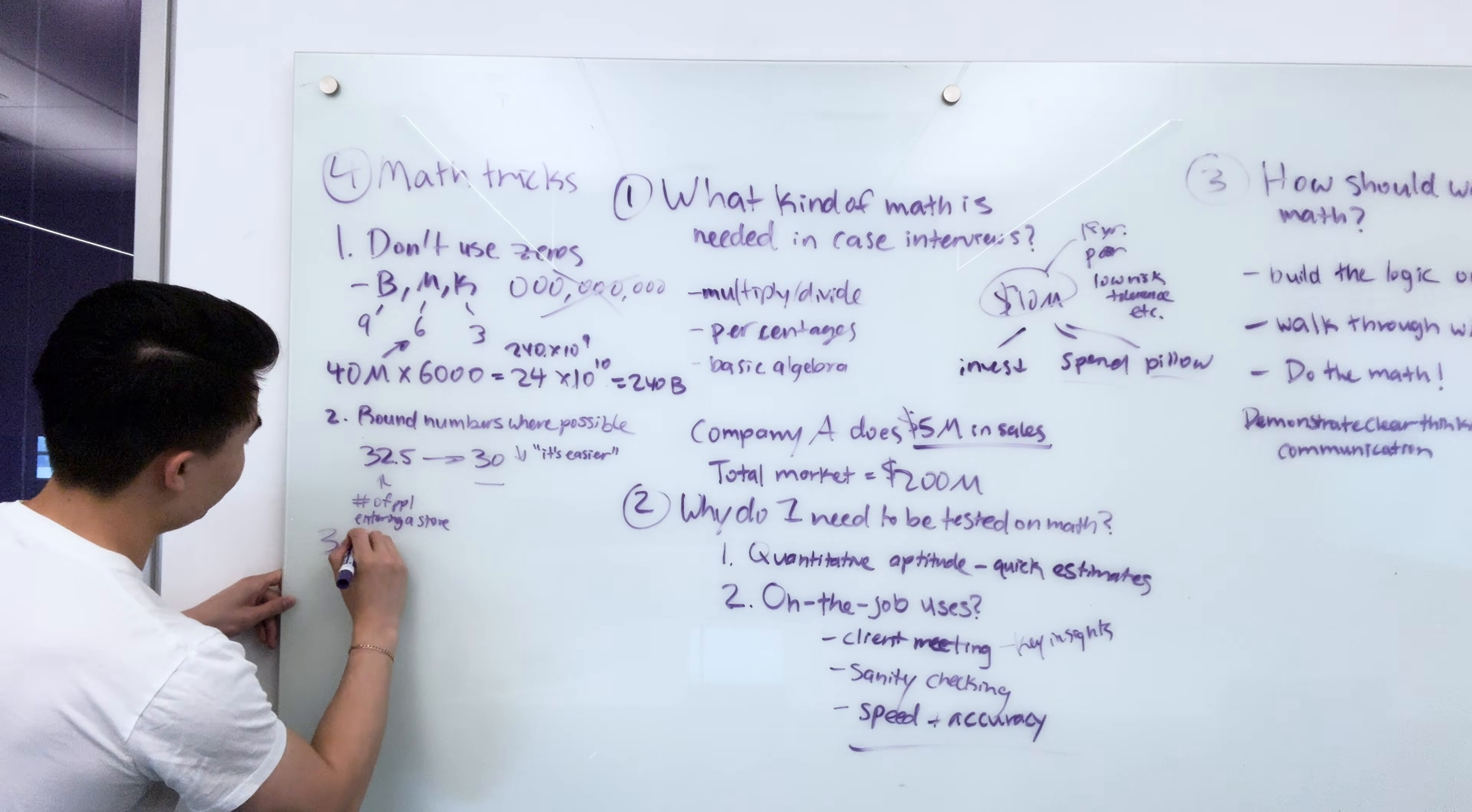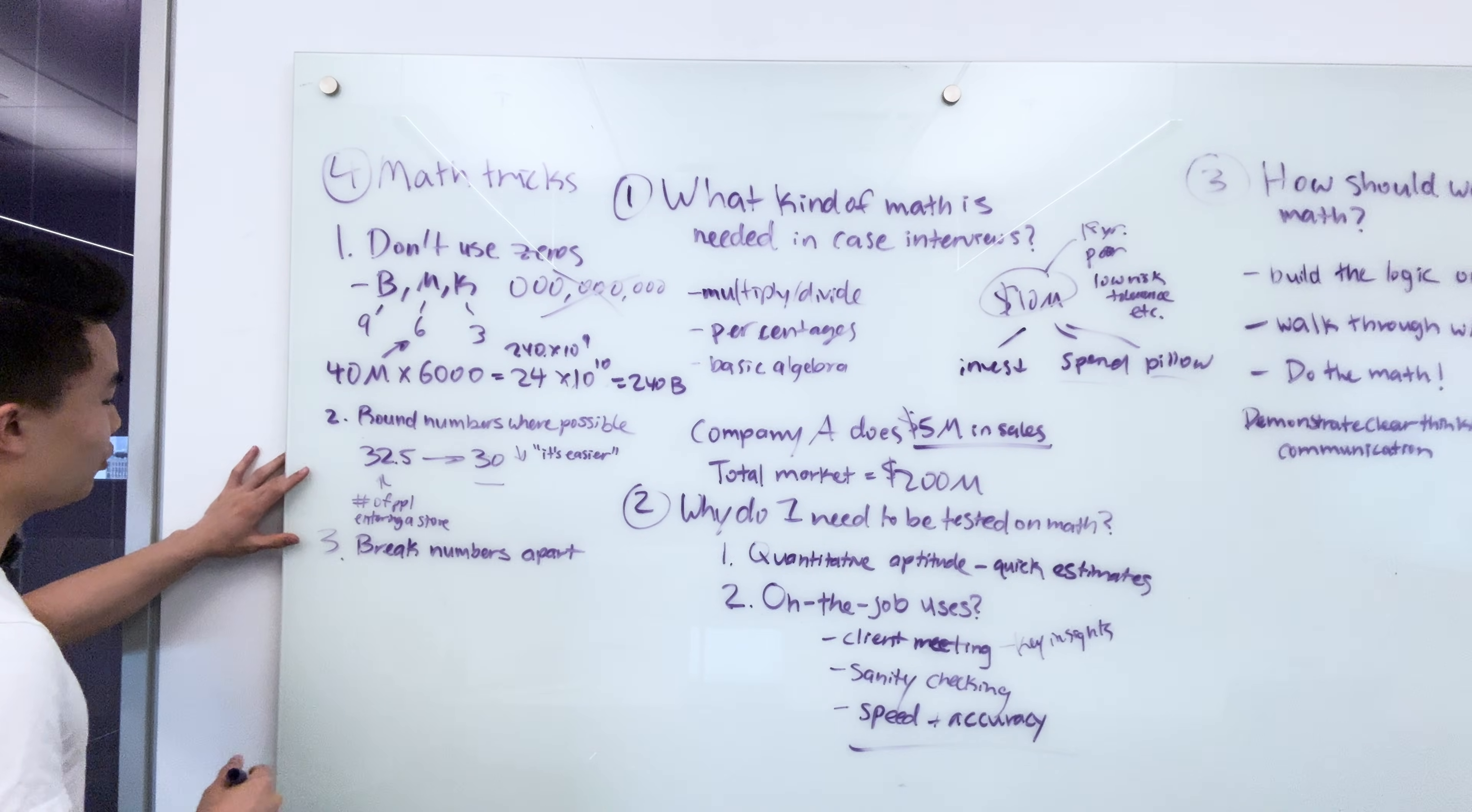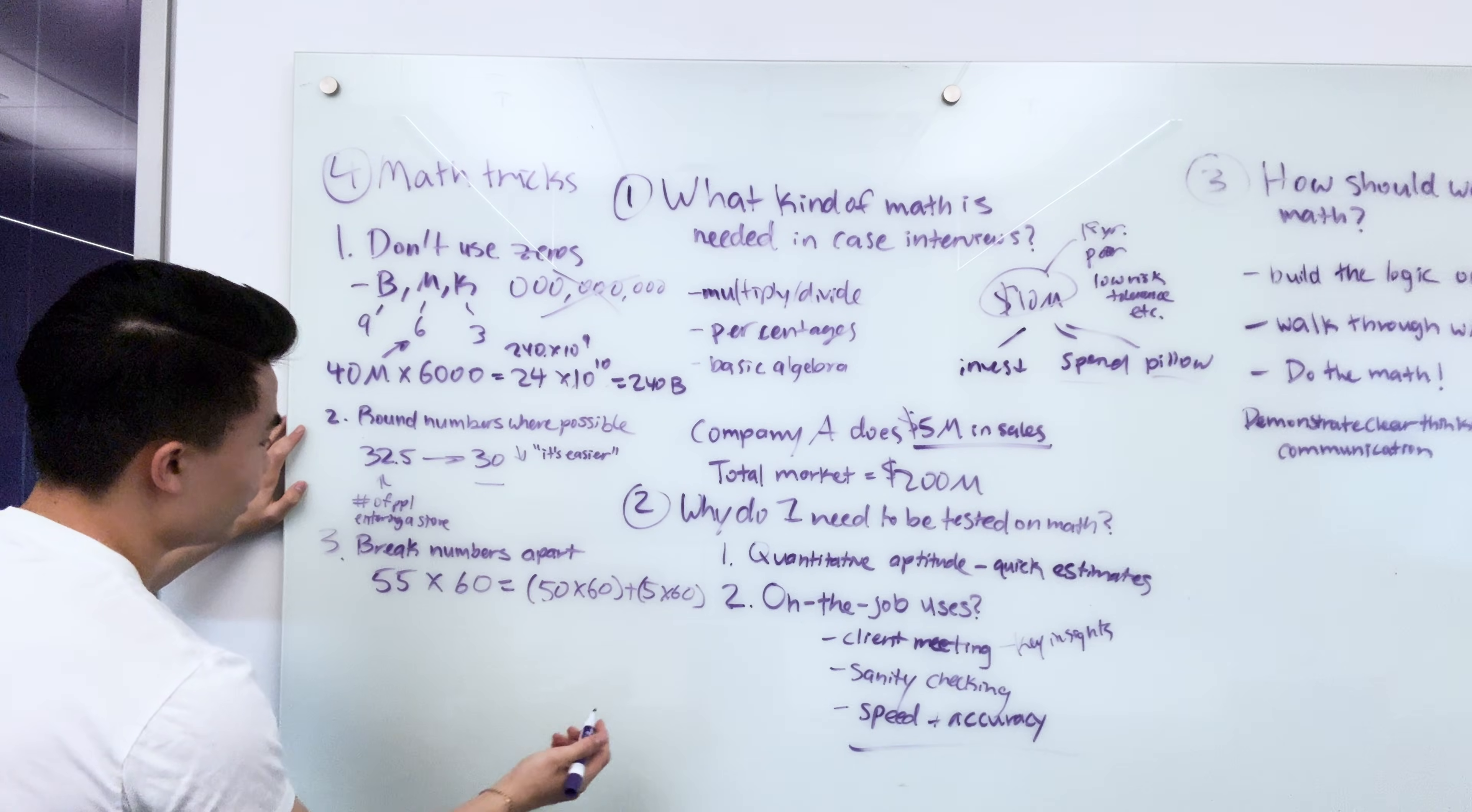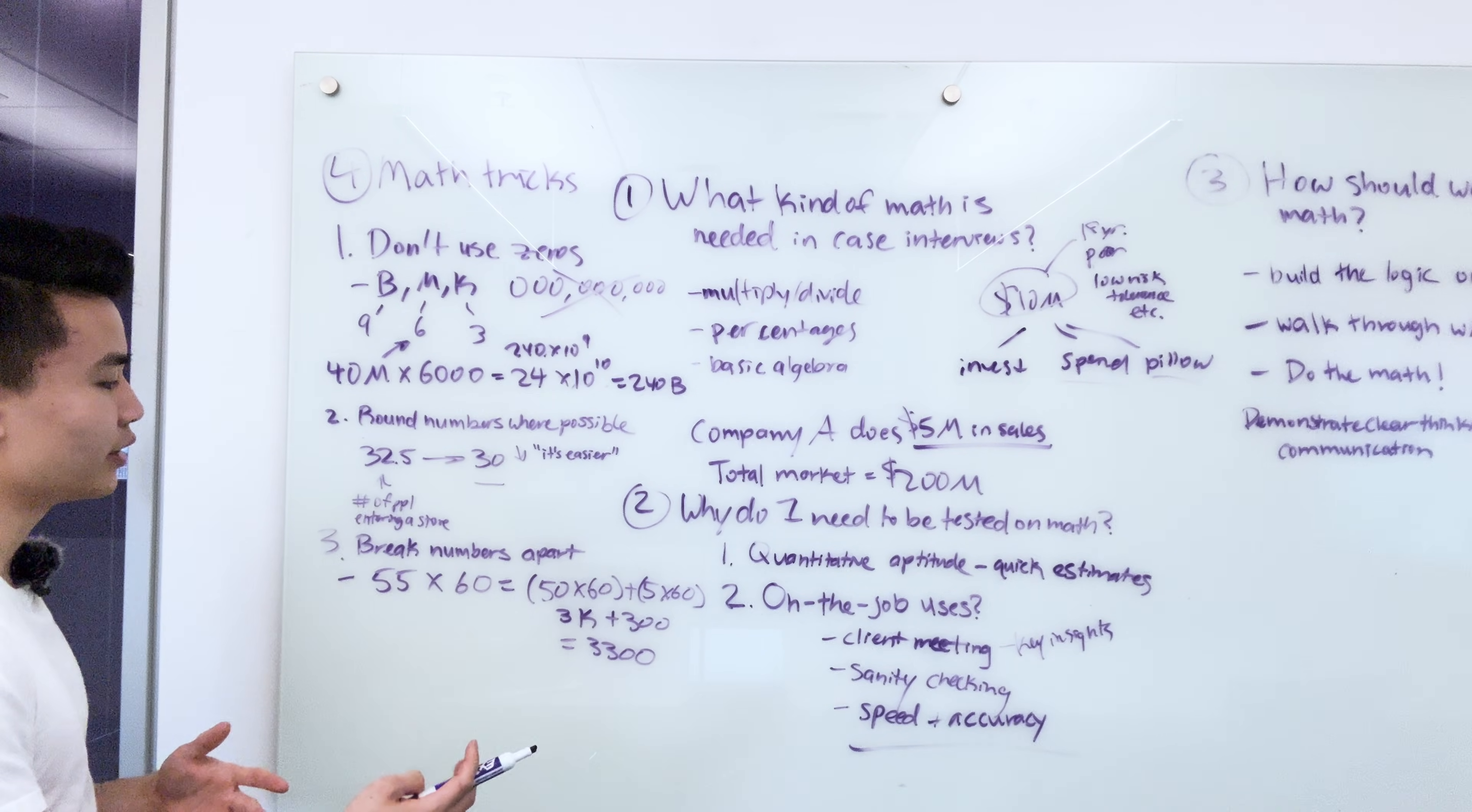Now the third tip that I have for math is you should always break numbers apart. Now, what do I mean by that? Well, oftentimes you're going to be asked to do things like double digit multiplication or just multiplying numbers that aren't perfectly round. And so I want to show you a quick trick that can help you really simplify the math. And so for example, if we have something like 55 times 60, we can break this out into basically 50 times 60 plus 5 times 60. And so we know that 50 times 60 is 3000. And we know that 5 times 60 is 300. And so the answer is 3300. And so you should always be looking for opportunities to break numbers apart in order to simplify the calculations for yourself and to avoid making unnecessary errors.